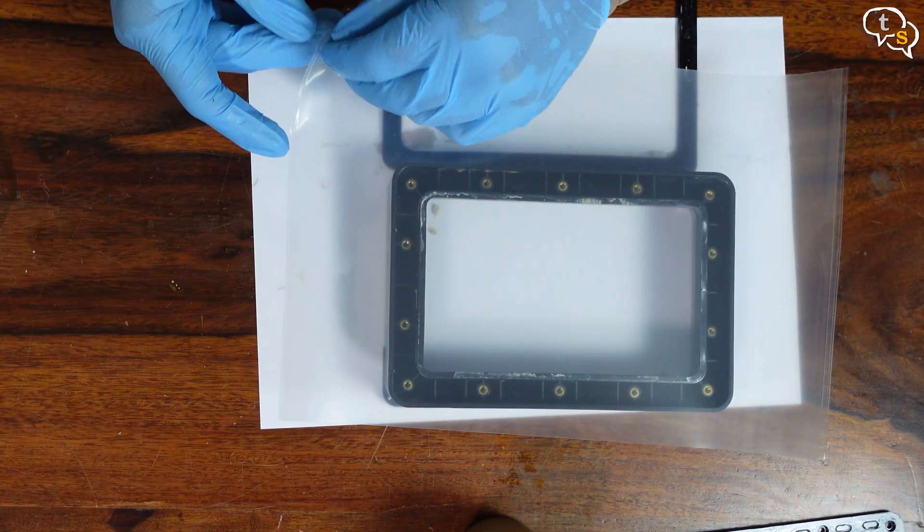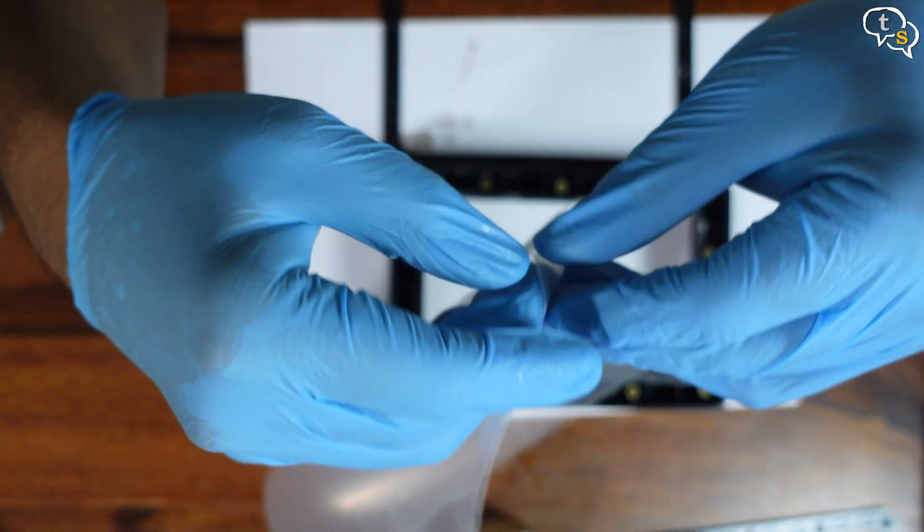Grab your new FEP film. This one's not pre-cut and is actually meant for a bigger printer. Peel off any protective layers.